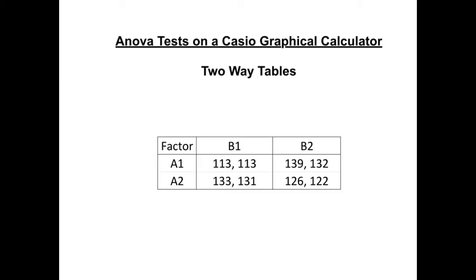The main difficulty in performing ANOVA tests on the calculator is in getting it to understand exactly what you want, and it's quite complicated for two-way tables. So I would always advise organising your data in a table as per the one on this video. We've got two different factors for A, two different factors for B, and it's important that we know which row or column the data is in.